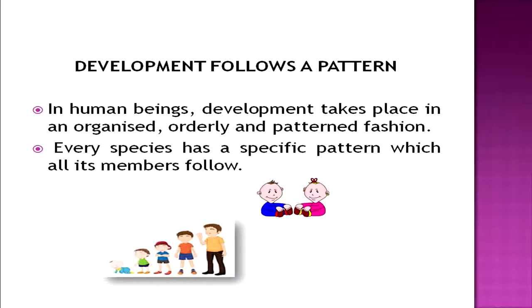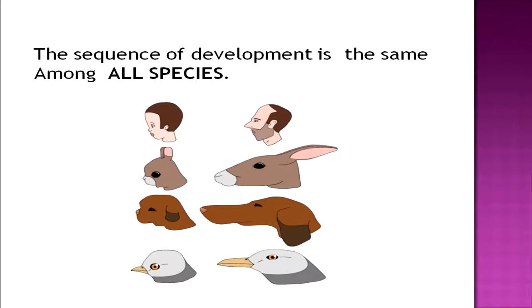Now let us know something about the principles of development — what are the patterns followed in development? The first principle is that development follows a pattern. In human beings, development takes place in an organized, orderly, and patterned fashion. Every species has a specific pattern which all its members follow; the sequence of development is the same among all members of a species. For example, all babies learn to turn over, crawl, stand, and then walk. They may skip a particular stage, but the order or pattern will remain the same.